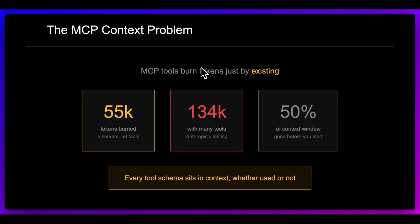Honestly, in my opinion, it's a great protocol. A lot of people have adopted it. There are easy ways to deal with authentication, depending on the services. There's a lot that's been ironed out. I don't think it's going away anytime soon. But the big trend we're going to see is instead of having tool schemas sit within context, we're going to have a lot of those tools progressively disclosed — because there are going to be tools you might only use one in ten turns of the conversation, maybe even less than that.